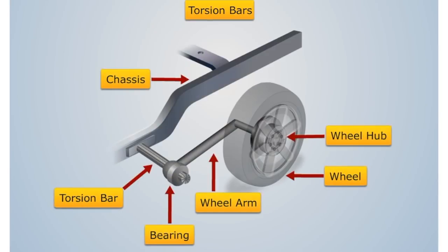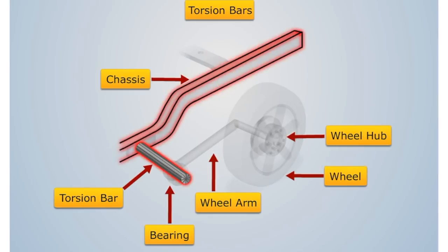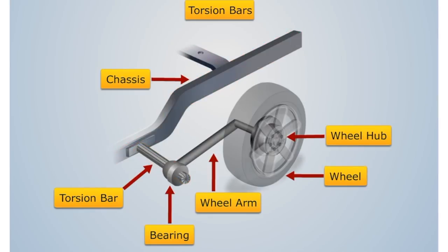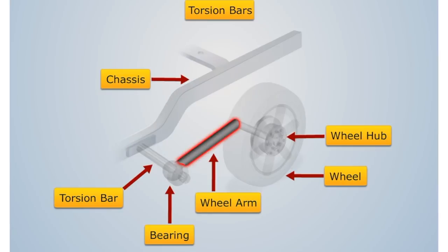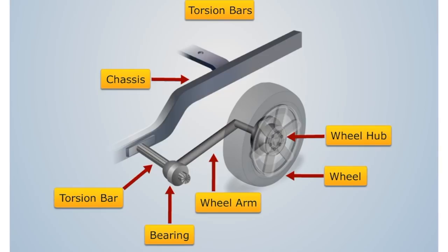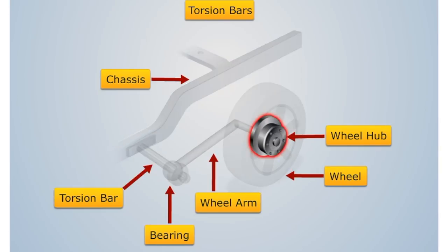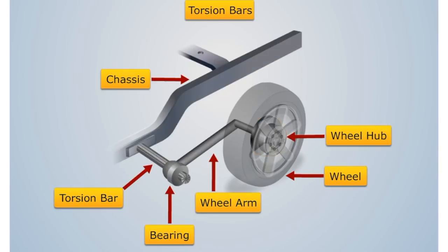The torsion bar suspension can be shown here. The torsion bar is twisted one end to the chassis frame when the other end is connected to the wheel arm and supported in bearing. The other end of the wheel arm is connected to the wheel hub, then it passes to the wheel.